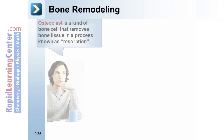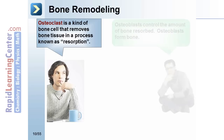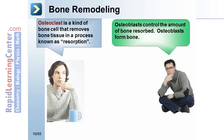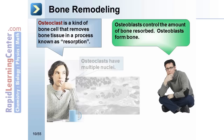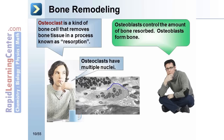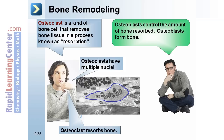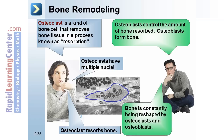Osteoclasts are bone cells that remove bone tissue in a process known as resorption. Osteoblasts control the amount of bone resorbed and form new bone. Osteoclasts have multiple nuclei and resorb bone. Bone is constantly being reshaped by osteoclasts and osteoblasts.